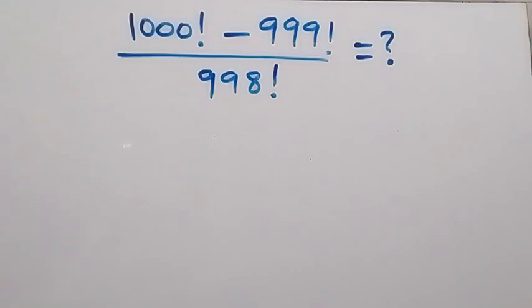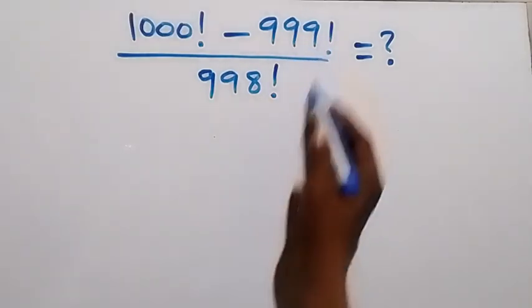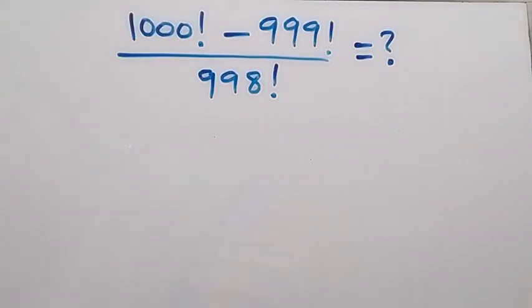Hello, you are welcome here. Let's solve this factorial problem. We have 1000 factorial minus 999 factorial, all divided by 998 factorial.